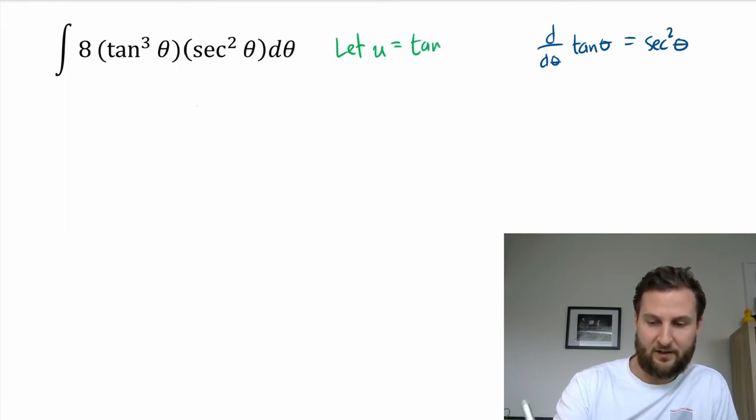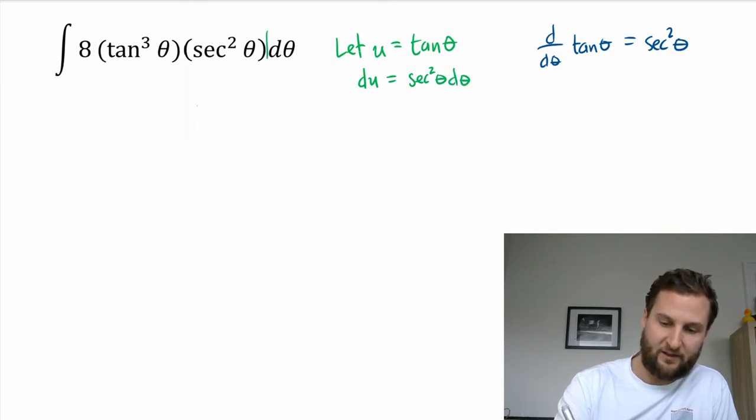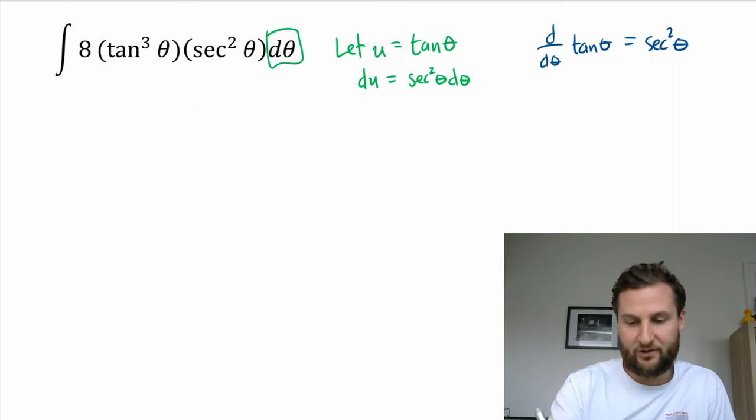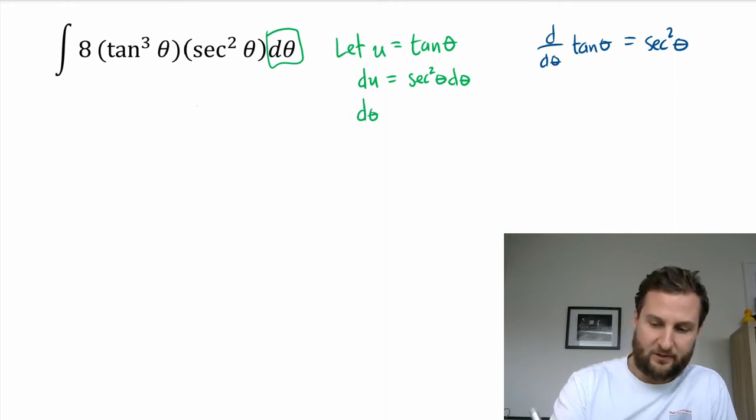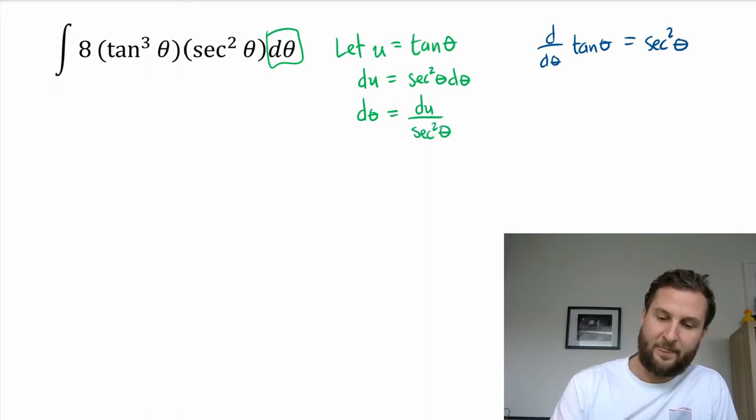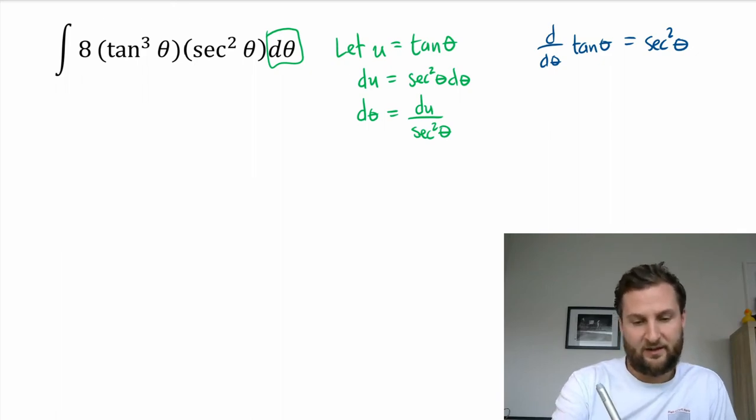So I'm just going to try this one first. So I will say, let u equal tan theta. So du equals secant squared theta d theta, and then I'm isolating for d theta to try to replace in my equation.